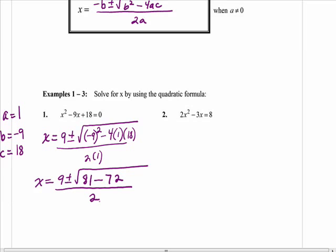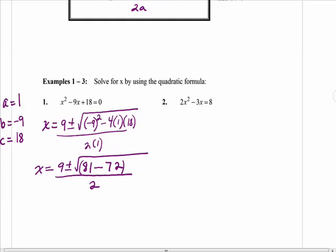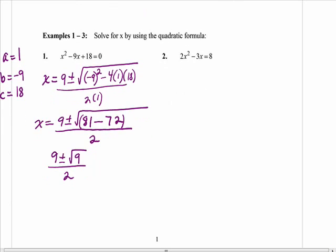Now we still have to take care of the 2 times 1, which is just 2. The order of operations, really there's invisible parentheses here, so you need to simplify what's under the radical first. We're going to subtract 81 minus 72 and get 9, and it's under the square root. Before we can do the plus or minus or even the division, we need to take care of the square root. What is the square root of 9? 3.